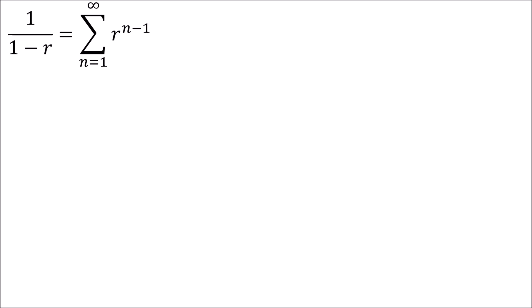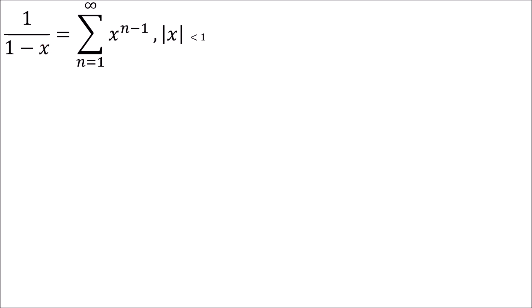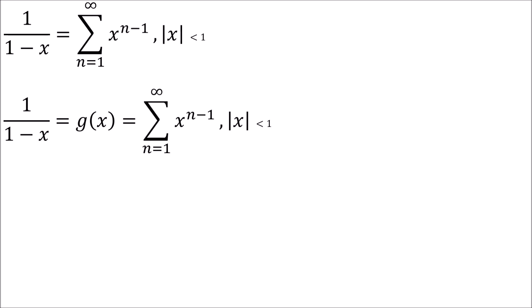For review, we start with our basic geometric series. We know that the sum from n equals 1 to infinity of r to the n minus 1 equals 1 over 1 minus r, given that the absolute value of r is less than 1. This choice of r is largely arbitrary — we use r to mean the common ratio. With functions, we change that to x. So now 1 over 1 minus x is my new function g of x, representable by this power series as long as the absolute value of x is less than 1.